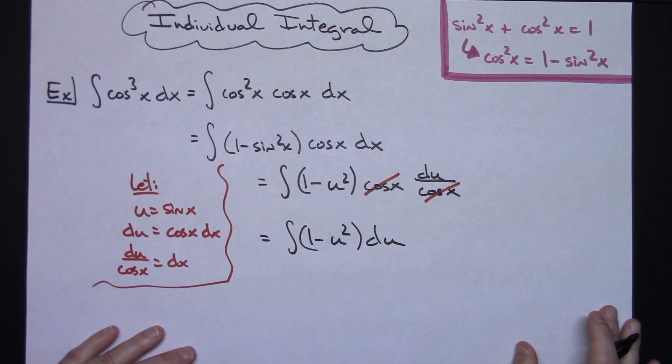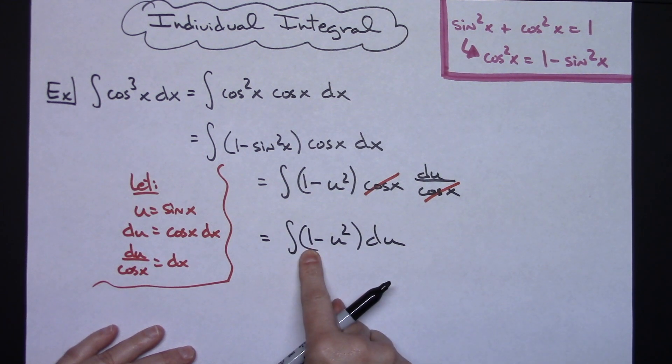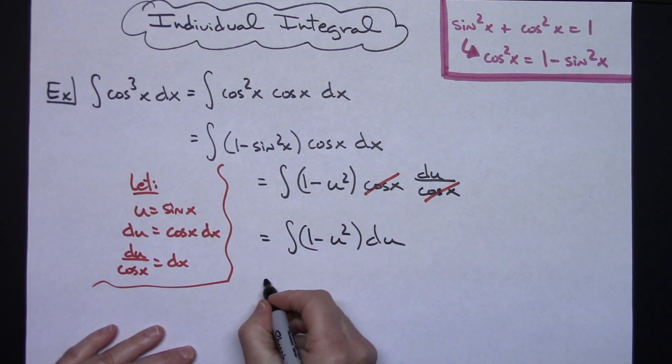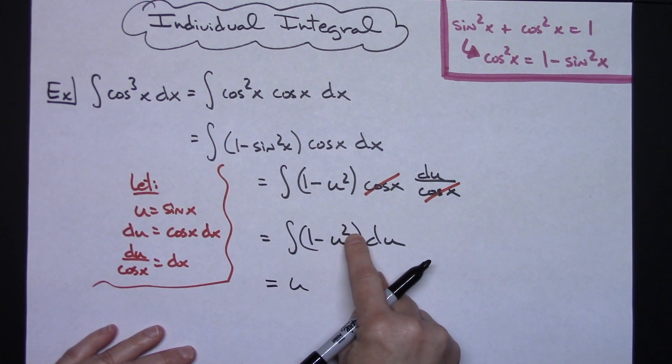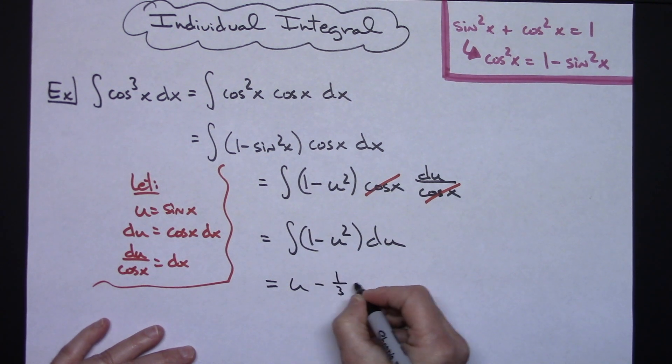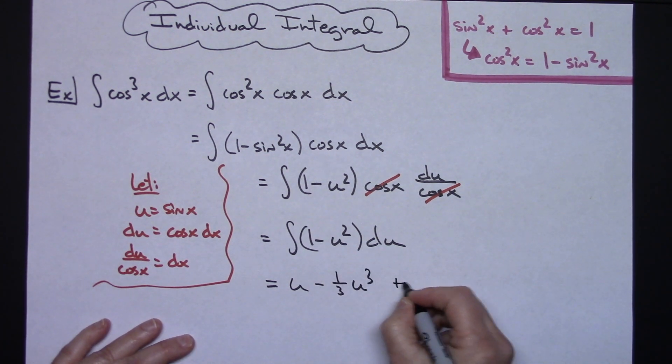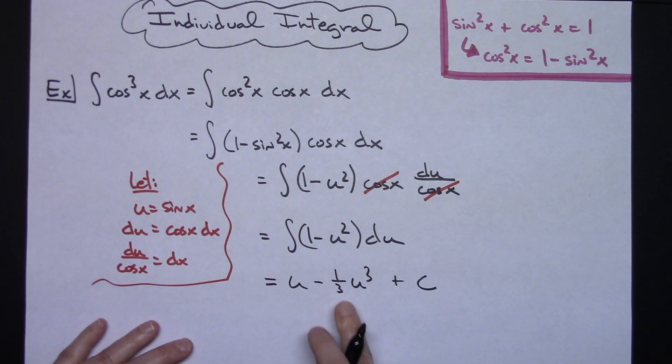From this point on it's just going to be a straight integration. When we integrate 1 with respect to du we'll get a u. When I integrate here, adding 1 there, I'll have a minus 1 third u to the third. We can go ahead and put that plus c on at this point.